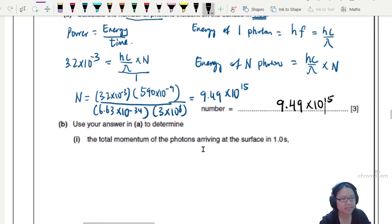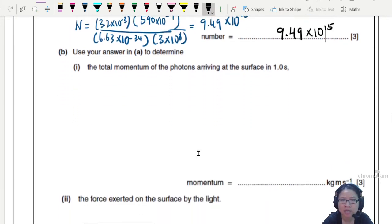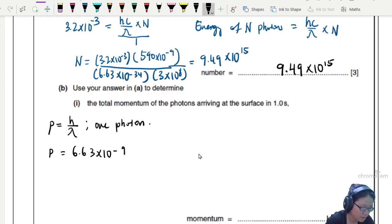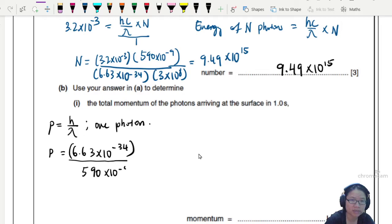You've used your answer to A, which is number of photons. Determine the total momentum of the photon arriving at the surface in one second. So how do we find momentum again? We are going to use the de Broglie equation. P is H over lambda. So I guess this is for a single photon or one photon.